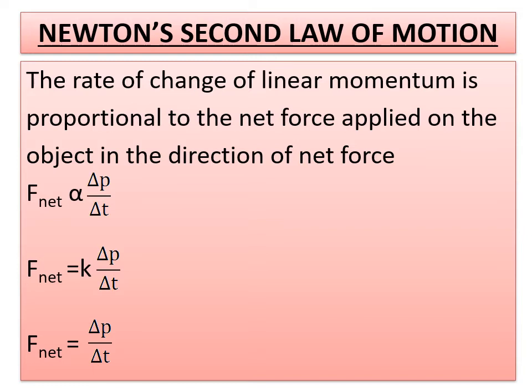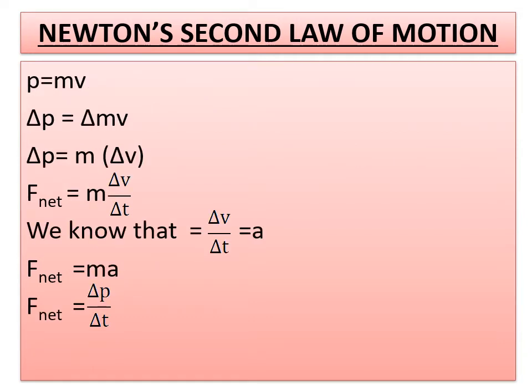F_net is equal, if you remove the proportionality the same thing here also you have to introduce a constant that is K. So K delta P by delta T. Again, if you assume F_net, delta P and delta T as 1, then we can make K is equal to 1. So we can write F_net is equal to delta P by delta T. We have learned linear momentum mathematical relation is P is equal to MV.